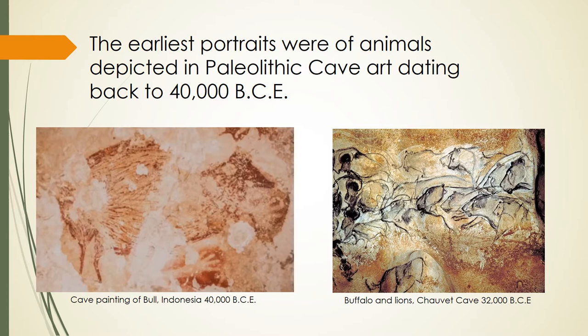From the portraits of a bull found in a cave in Indonesia to over 420 animal paintings and engravings discovered in the Chauvet caves in France, these representations of predators and prey are narratives of the animals. They tell the story of a hunt, the animal's movement, and the activities witnessed by the earliest humans.